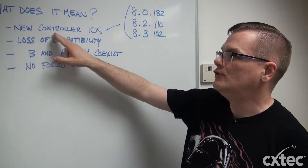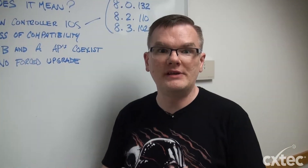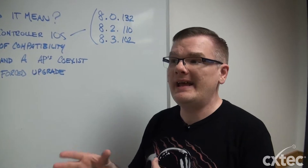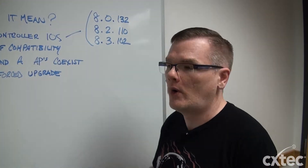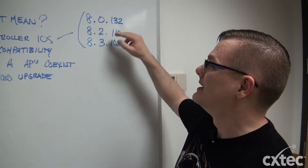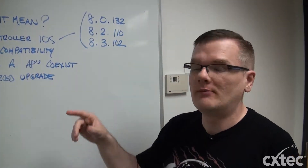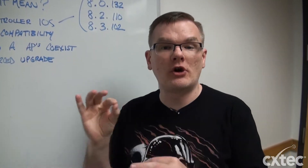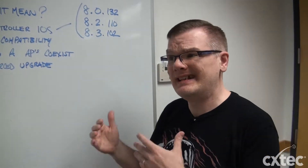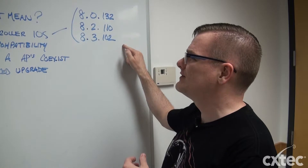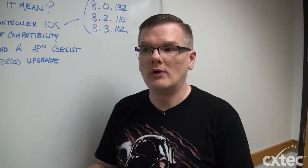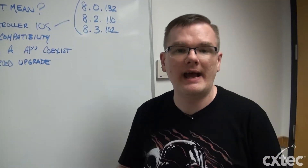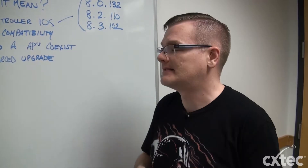One of the major things we need to be aware of is the new controller iOS requirements for the B domain. What Cisco did is they didn't just give us one version of software — they didn't just say 8.3X is going to be the new requirement. They gave it to us in several flavors, and I have them cited here at least as a starting point: 8.0.132, 8.2.110, and 8.3.102. Those were the starting software revisions. Today there are higher versions of these trains already available, but I wanted to give you the starting points as a minimum that you needed to have to be able to utilize the B domain APs.